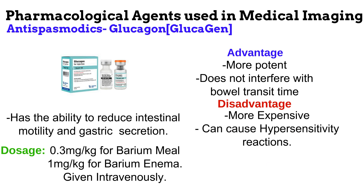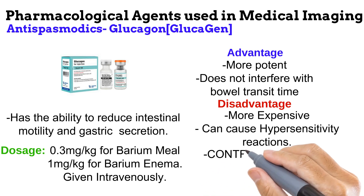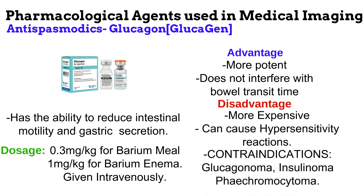A disadvantage of glucagon, however, is that it is more expensive than Buscopan. And because it is a protein molecule, it has a tendency to cause hypersensitivity reactions. It is contraindicated in conditions like glucagonoma, insulinoma, and phaeochromocytoma.